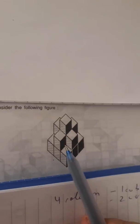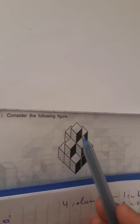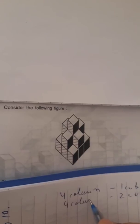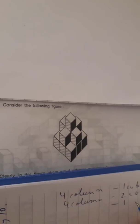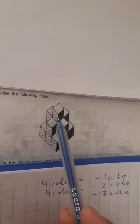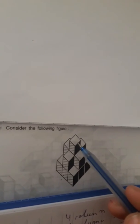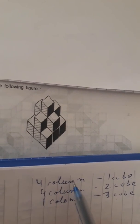Similarly for two cubes, how many columns are there? You can see two cubes here, and similarly here — one, two, three, four — so four columns for two cubes as well. For three cubes, you can see there is only one column. So: three cubes have one column, two cubes have four columns, and one cube has four columns.